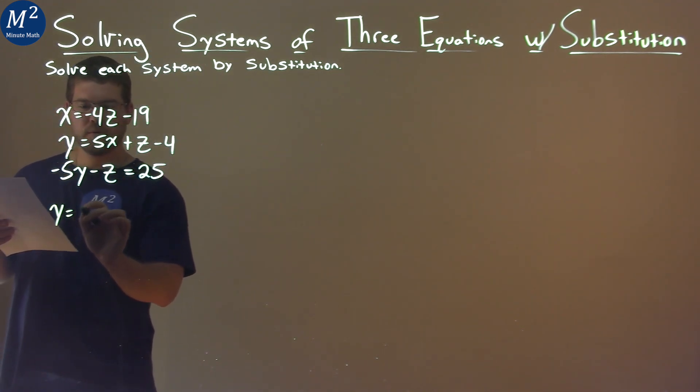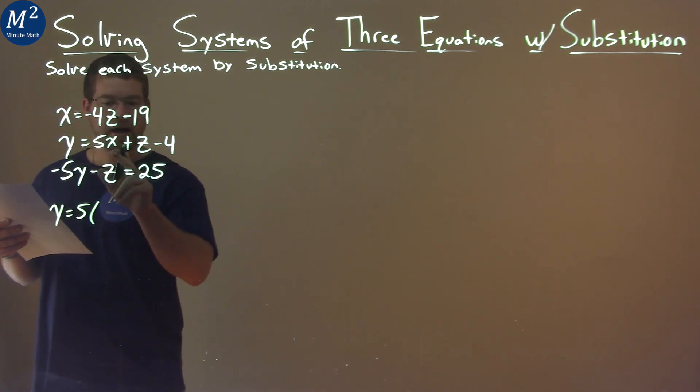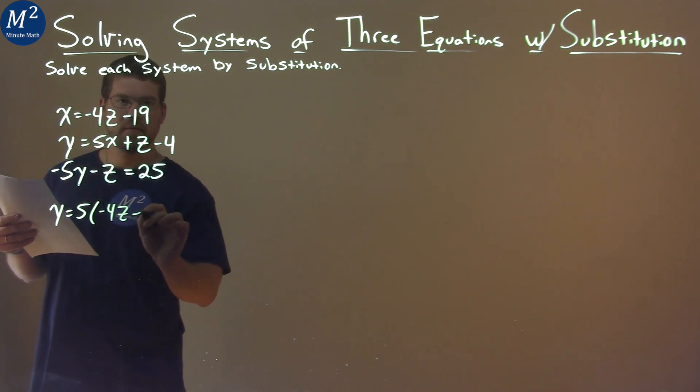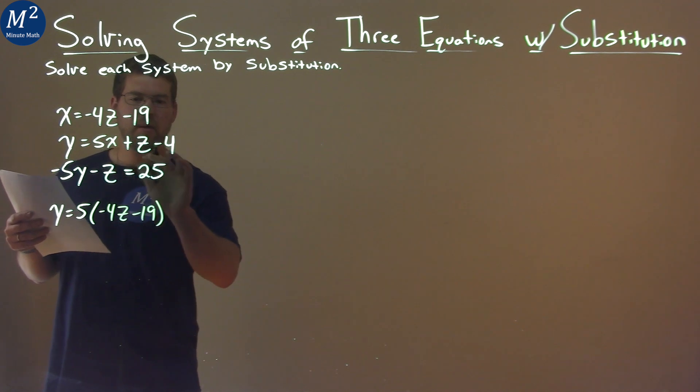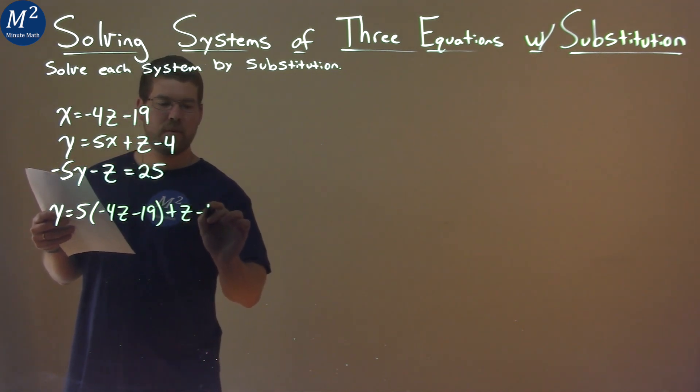So let's do that. We have y equals 5, and instead of x, we're going to put this value, negative 4z minus 19. Then we add a z to it, and we have a minus 4.